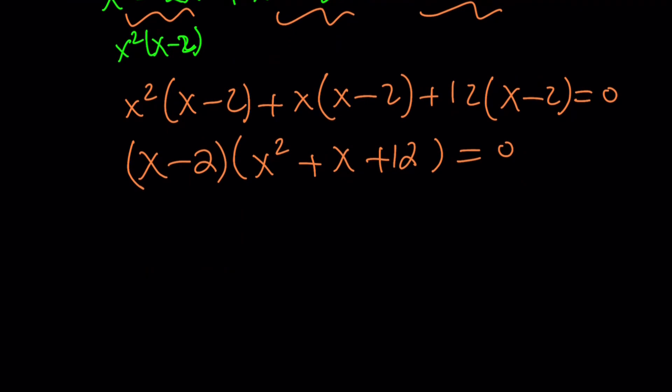Well, this is not going to have real solutions, right? So we need to write those complex solutions by using the quadratic formula. They are negative b plus minus the square root of b squared, which is 1, minus 4ac. That's going to be 1 minus 48.